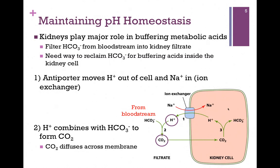Here's how the process works. In step one of our diagram, an antiporter moves protons out of the cell while simultaneously moving sodium inside the cell — this is an ion exchanger. In step two, those protons combine with the bicarbonate to form CO2. This can occur spontaneously, but carbonic anhydrase makes it happen much faster. CO2 is neutral and nonpolar, so it readily and rapidly diffuses across the membrane into the cell.